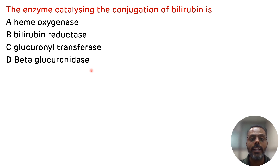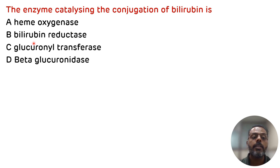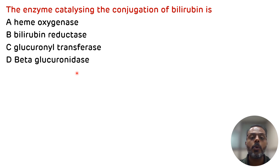We have already seen in the previous slide that conjugation reaction is done with the help of glucuronate transferase enzyme. If there is an absence or decreased activity of this glucuronate transferase enzyme, it results in Crigler-Najjar syndrome. In type 1 Crigler-Najjar syndrome there is a complete absence of the glucuronate transferase enzyme, while in type 2 there is a reduced activity. As for the other enzymes: heme oxygenase converts heme into bilirubin; bilirubin reductase converts bilirubin; and beta glucuronidase converts bilirubin diglucuronide in the intestine into bilirubin by releasing the glucuronate unit. So the correct answer is C. glucuronate transferase.